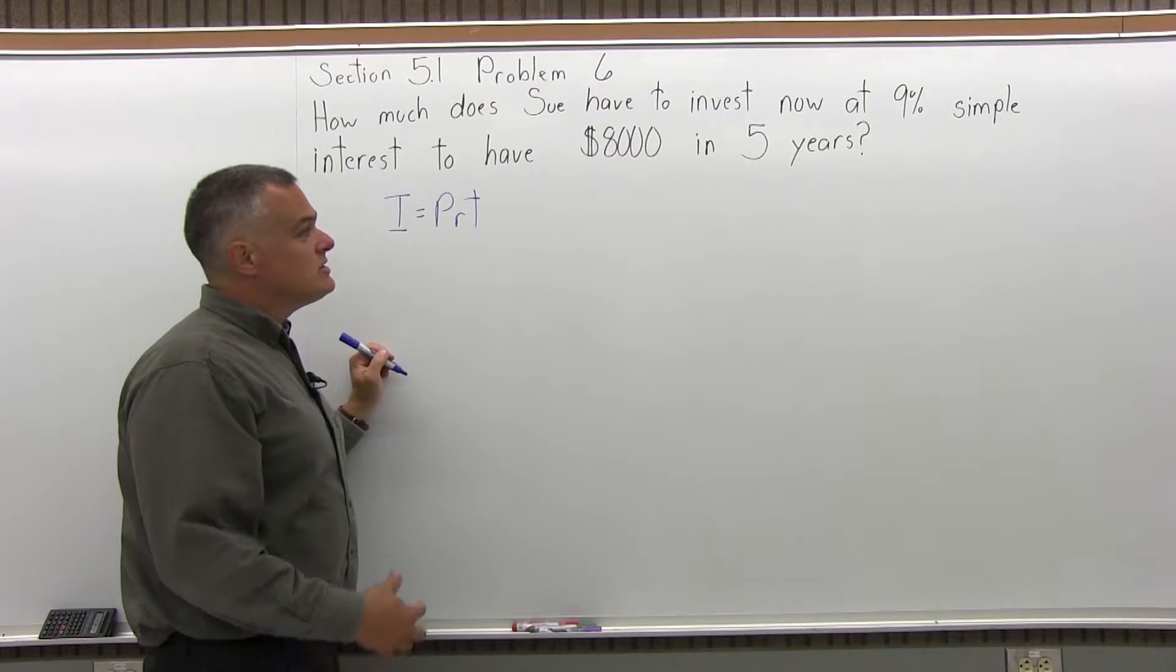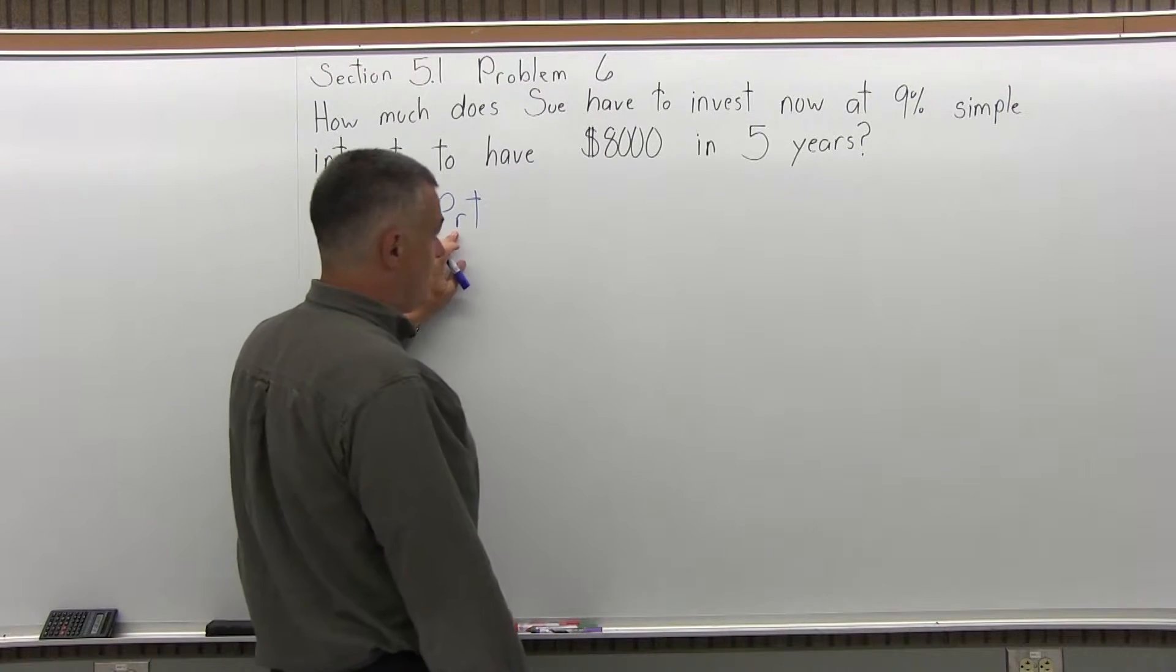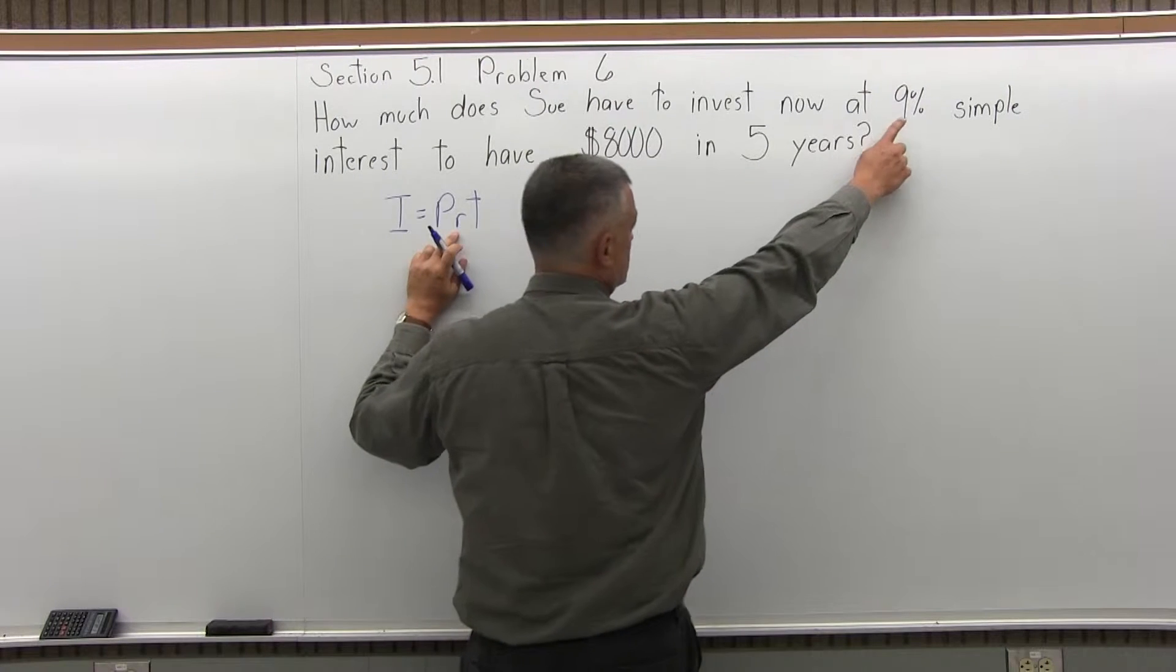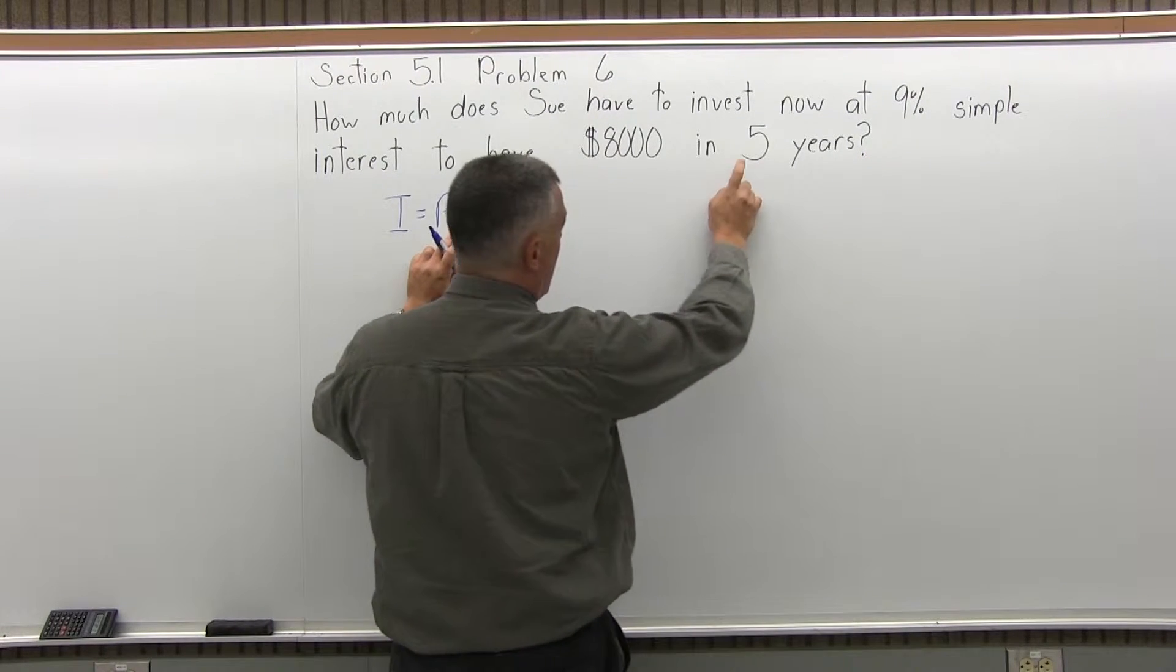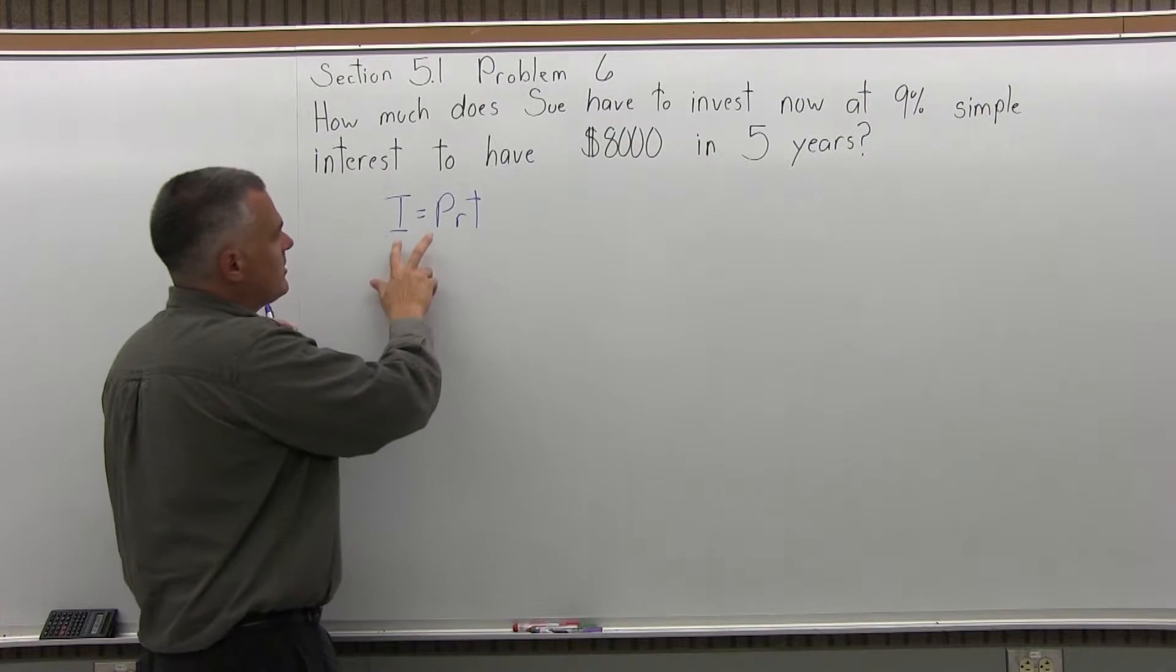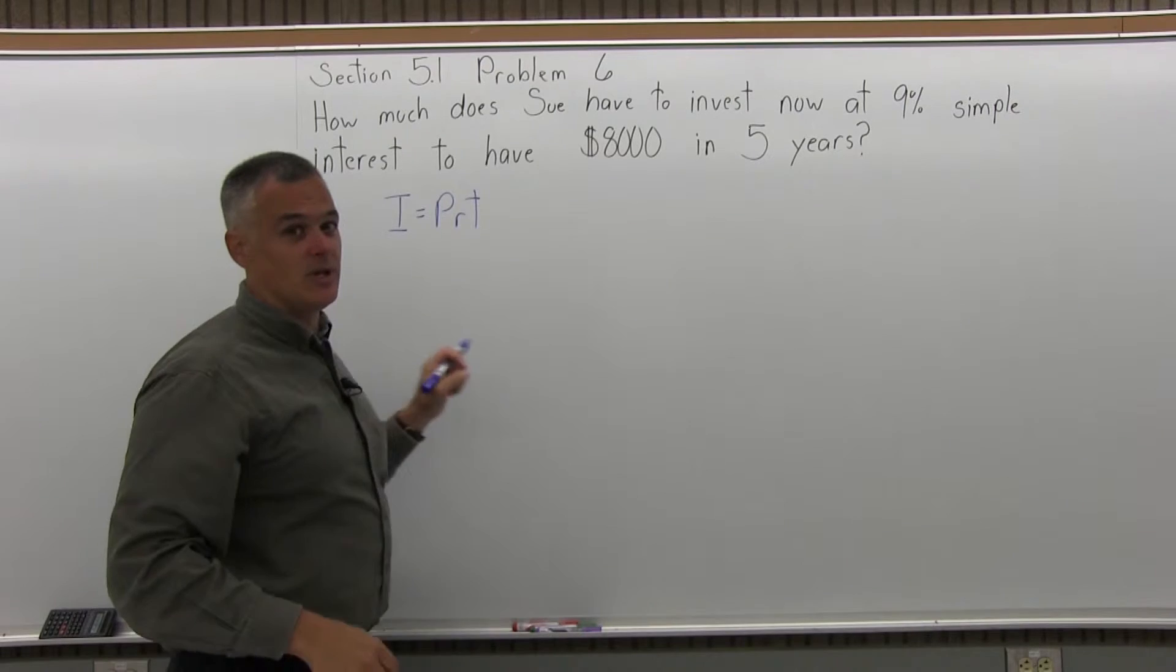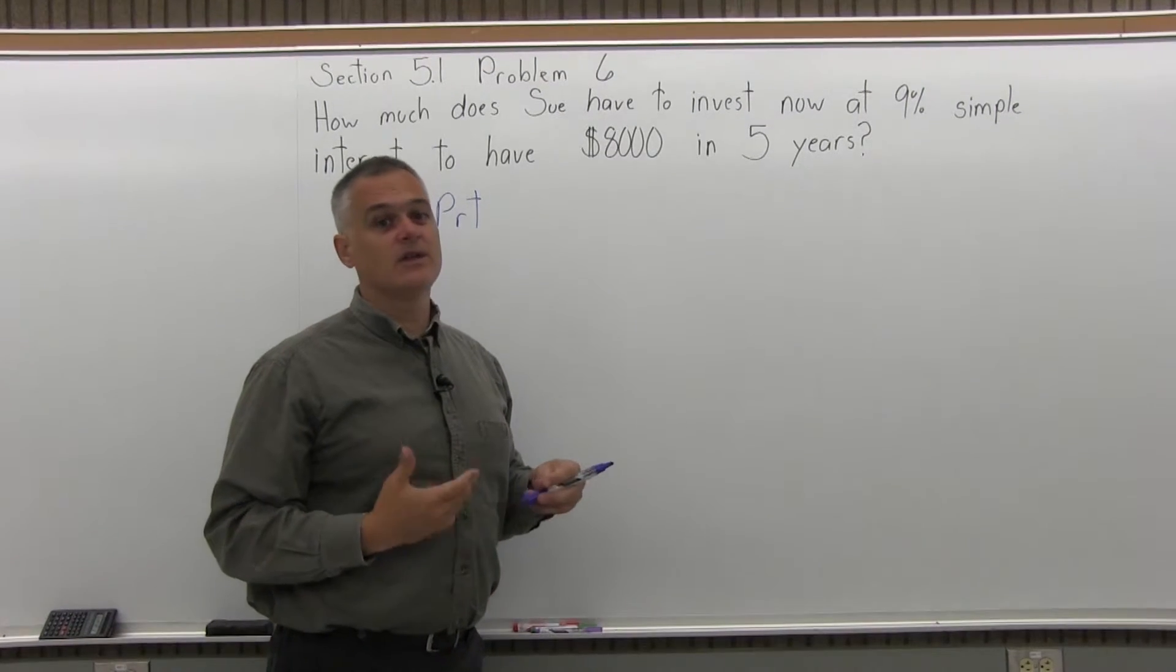Now as you start plugging into this formula, you'll see that you have a problem. I know the R, it's 9%, which is going to be .09. I know the T, the time in years is five years. The problem is I don't know the interest and I also don't know the principle. And if I knew either one, I could get the answer in my head.